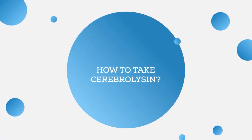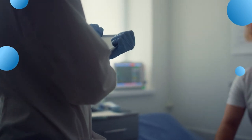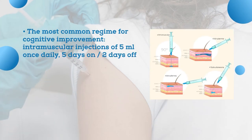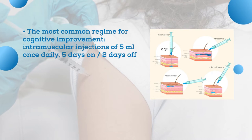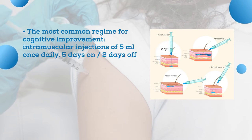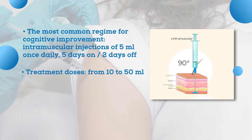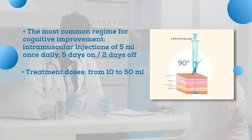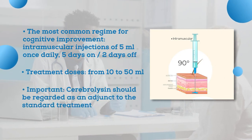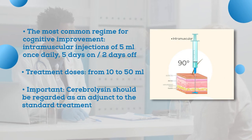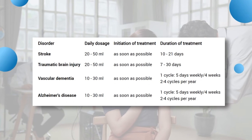How to take Cerebrolysin depends largely on your condition, and the optimal dosage and route of administration must be prescribed by an attending physician. The most common regimen for cognitive improvement is intramuscular injections of 5 mL once daily — it's important to inject slowly as it might be a bit sensitive. You may want to cycle Cerebrolysin five days on, two days off. Treatment doses vary from 10 to 50 mL. Remember that Cerebrolysin is not a cure-all and should be regarded as an adjunct to standard treatment only, especially for acute conditions like stroke, TBI, or dementia.